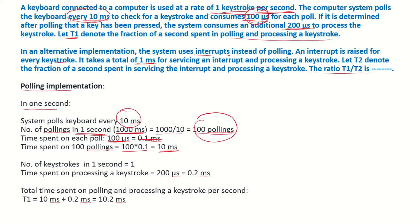Also, in 1 second there is 1 keystroke per second, as given in the question. The number of keystrokes is 1, and the time spent on processing the keystroke is 200 microseconds, which is 0.2 milliseconds. So in 1 second, the total time spent on polling and processing the keystroke — that is T1 — is 10 plus 0.2, which gives us 10.2 milliseconds.